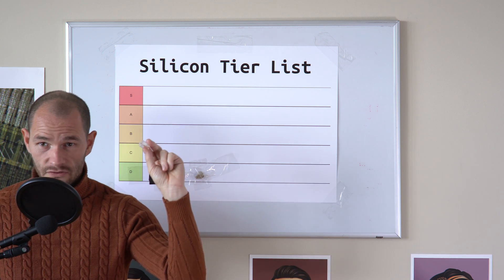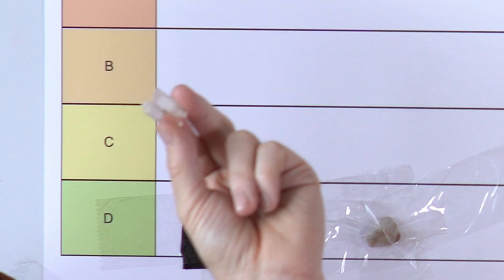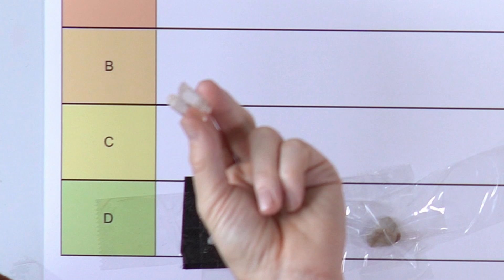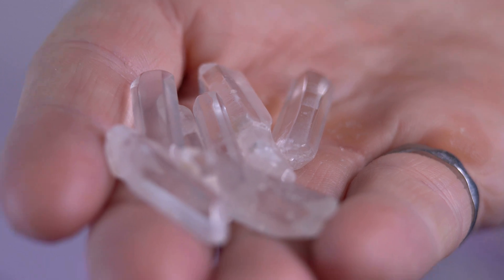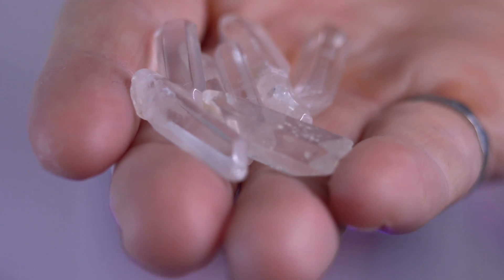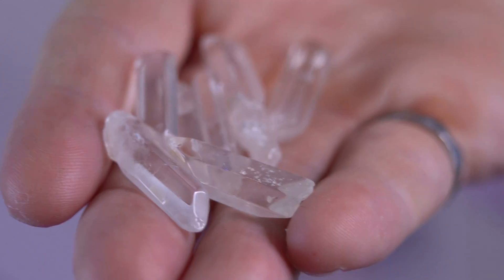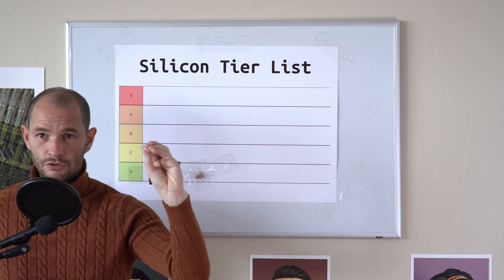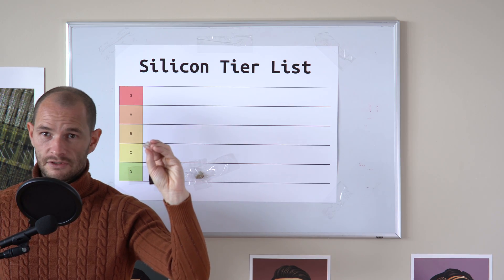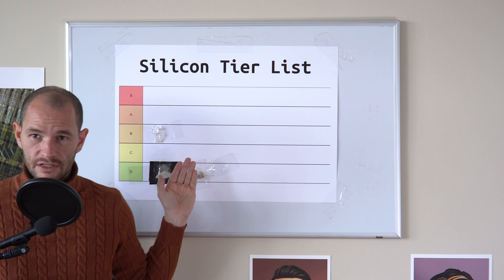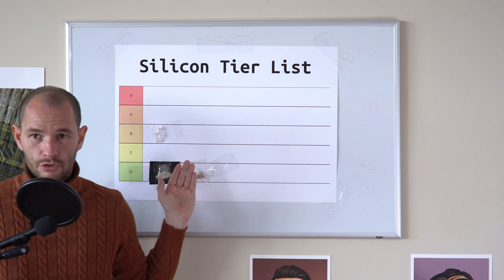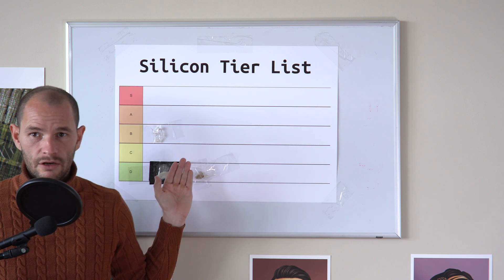Next, I have these fairly pure quartz crystals. These crystals contain a much higher concentration of silicon dioxide. They also look pretty cool, which is why people like to collect them. You can also use them for witchcraft. For this reason, I'll put quartz crystals in the B tier.